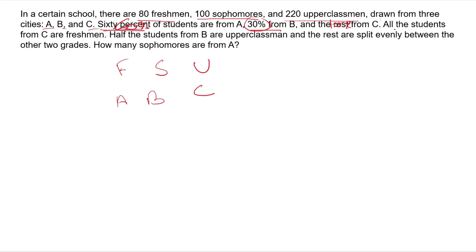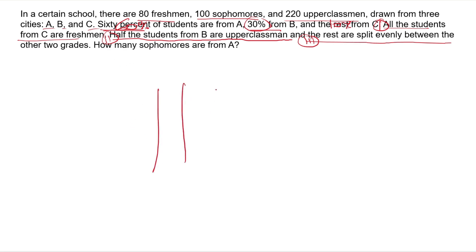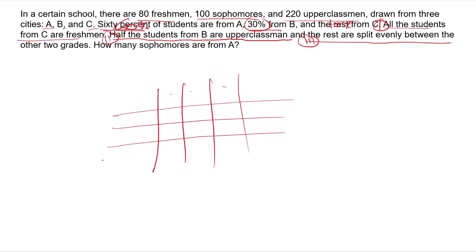Half of the students from B are upperclassmen. The rest from B are split evenly between the other two year groups. So set up the matrix with rows: freshman, sophomore, upperclassman; columns: A, B, C; and totals.